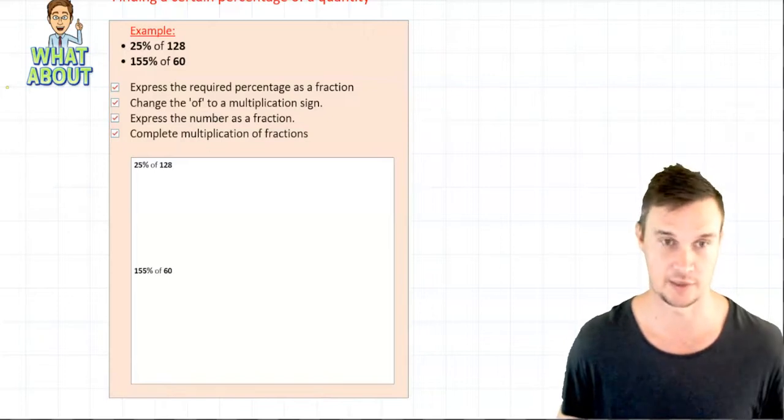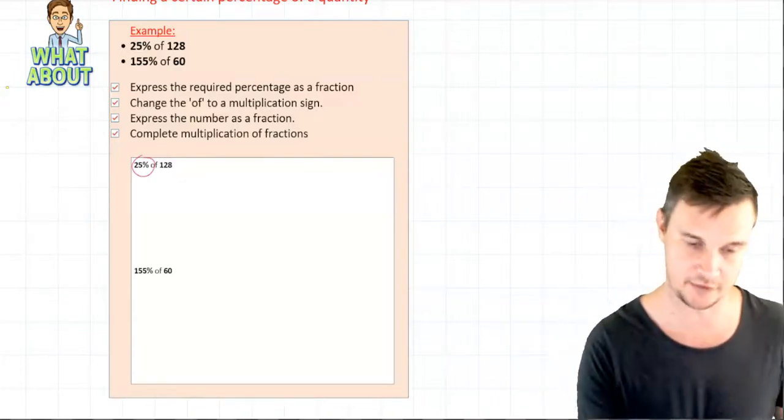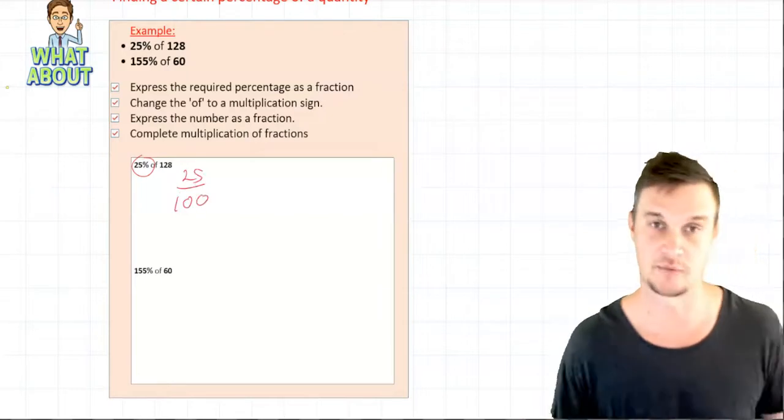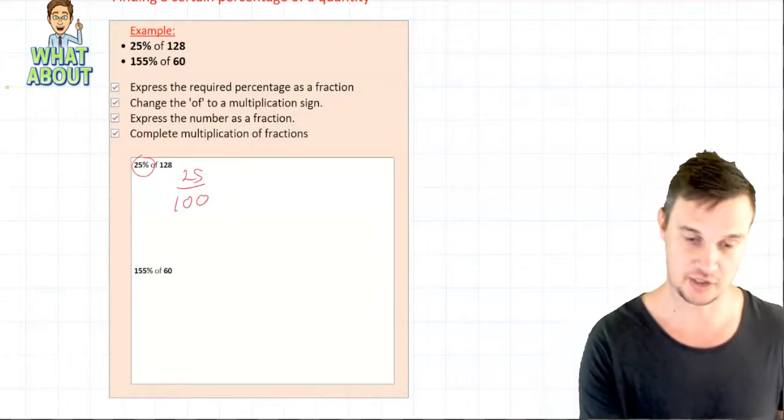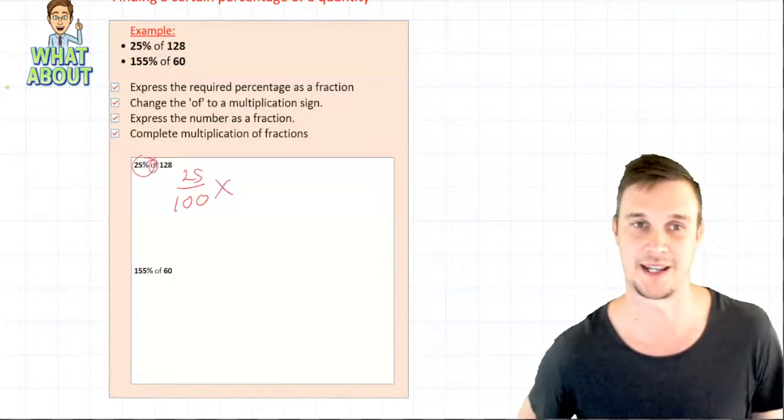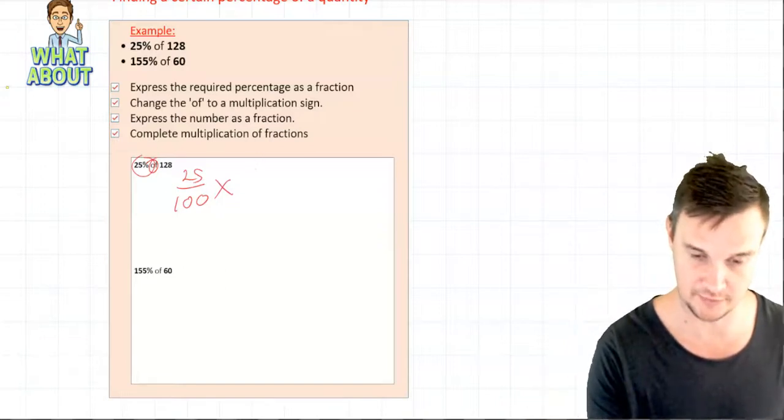Well it's going to look something like this, we'll do a quick example as we go now. So I'm going to do step one here and express the required percentage as a fraction, so I have 25 over 100, so I've converted that into a fraction. I'm going to change the of to a multiplication sign, okay so that now means multiplication, and then finally I want to express the number as a fraction too, so it's 128 over 1.